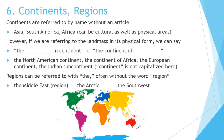Number 6: Continents and regions. Continents are referred to by name WITHOUT an article. For example, Asia, South America, Africa — these can be cultural as well as physical areas. However, if we are referring to the landmass in its physical form, we can also say the continent or the continent of blank. Notice we put an N on the word with the blank continent. Examples: The North American continent, The continent of Africa, The European continent, The Indian continent. Continent is not capitalized here.